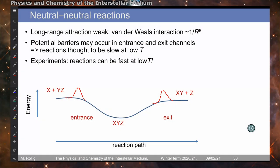Now when we have not an ion colliding with a neutral but two neutrals, the thinking used to be that this is much too inefficient because the reaction probability is very weak due to the missing attraction. The only possible long-range attraction should be a van der Waals interaction which goes with one over r to the power of six.